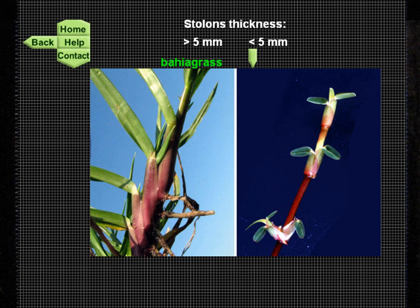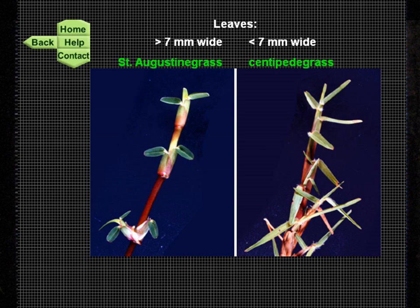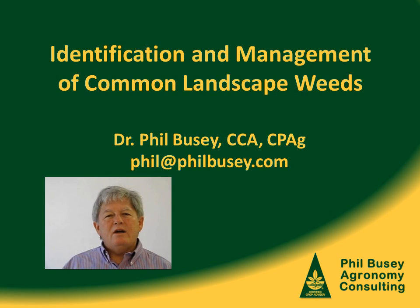In the key on idweed.com, near the end of the key for grasses with spreading growth habits, you'll be asked whether the stolon thickness — the above-ground runner — is very thick, five millimeters or thicker, or more slender. That choice distinguishes bahia grass on the left from other choices on the right, such as St. Augustine grass. If you take the latter choice, the next question is the width of the leaves: if relatively wide and roundish, it's typically St. Augustine grass on the left; if narrower than seven millimeters with a pointy tip, it would be centipede grass on the right. I'm going to turn you back to our moderator, and I will see you again in a few minutes.